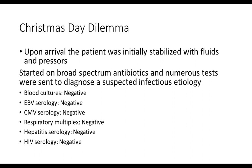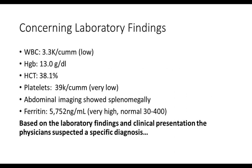Blood cultures were negative, EBV serology was negative, CMV serology, respiratory multiplex, hepatitis serology, and HIV serology were all negative. However, he did have some concerning laboratory findings. His white count was quite low. Hemoglobin and hematocrit were okay. Platelets were also very low — so he's leukopenic and thrombocytopenic. On abdominal imaging he had splenomegaly. And interestingly, he had a very high ferritin — above 5,700, compared to a normal of around 400.